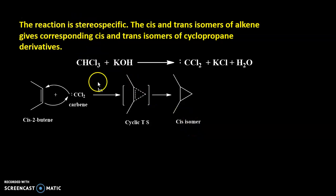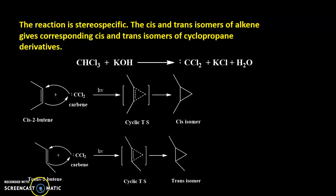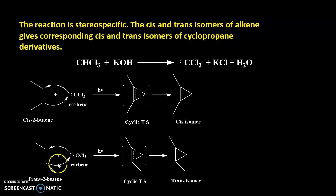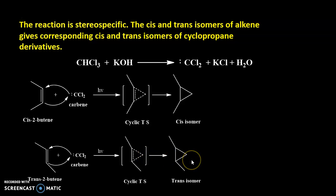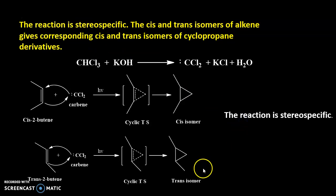Now we will see one more example with trans-2-butene. Here also, the geometry is retained in the product. The mechanism is the same: this bond is shifting here, these electrons are shifting here via a cyclic transition state to form the product. The product is the trans isomer, again proving that the reaction is stereospecific.